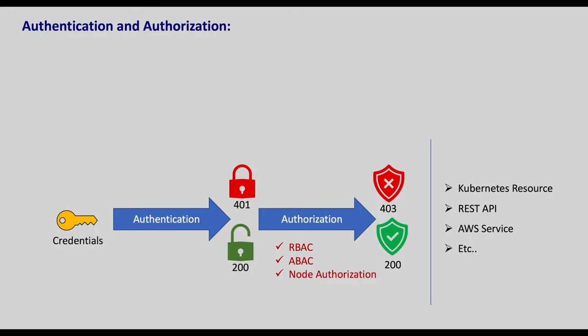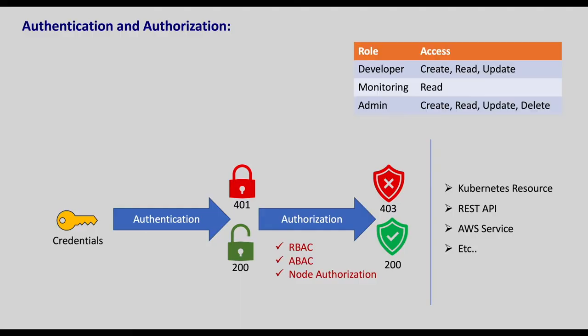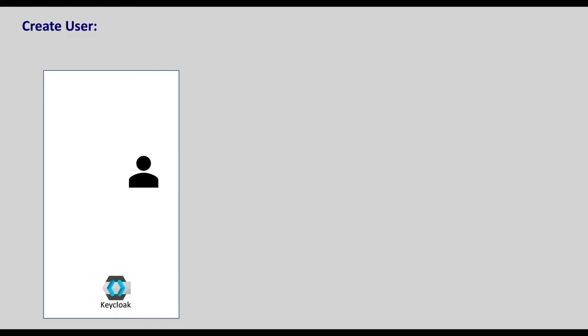The popular authorization model is role-based access control, which determines whether a certain user is allowed to perform a certain action on a given resource based on his role. Based on roles, the amount of access can vary. Like if you are a developer, you can create, read and update resources; if you are from the monitoring team, you can only read the resources; and if you are an admin, you can do everything.